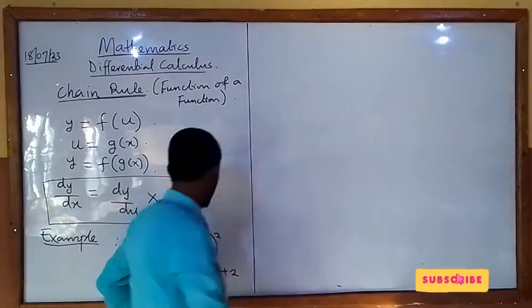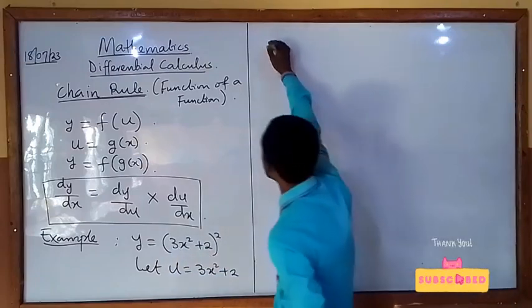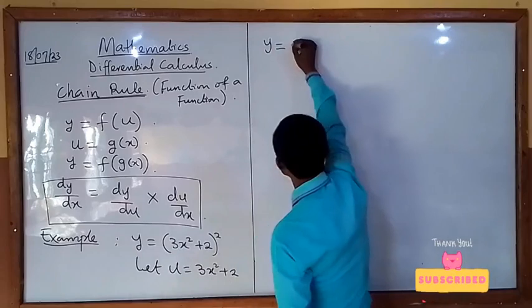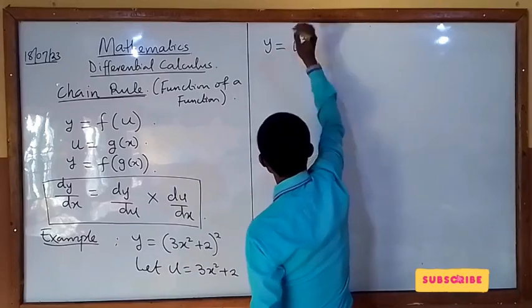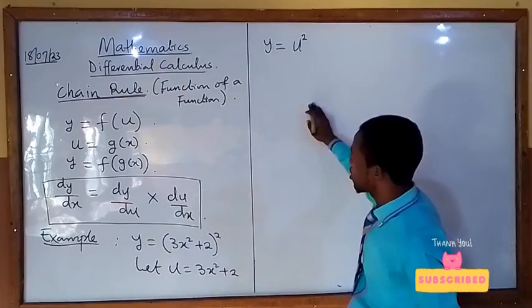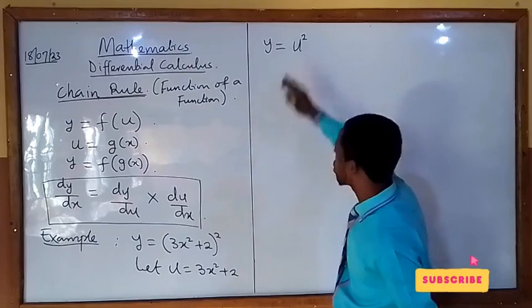So our u is 3x² + 2. I can write y as y equals u². So we now have it in the form of function of a function. u is a function of x and y is a function of u.